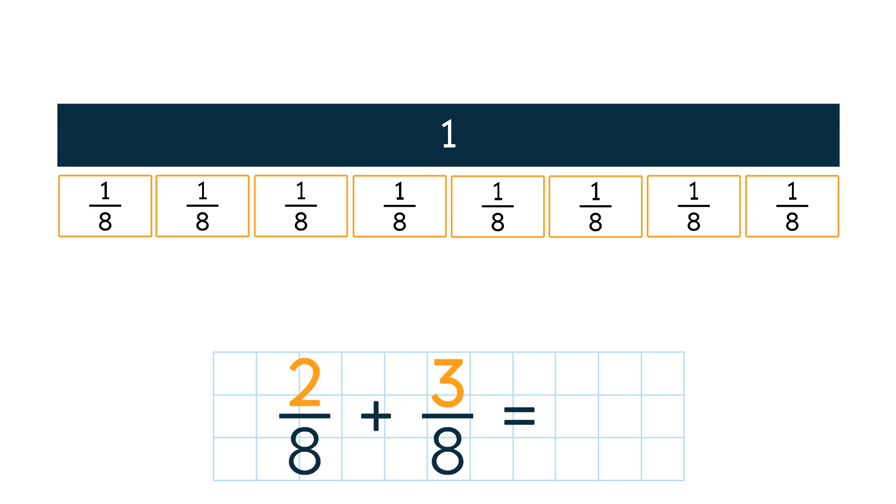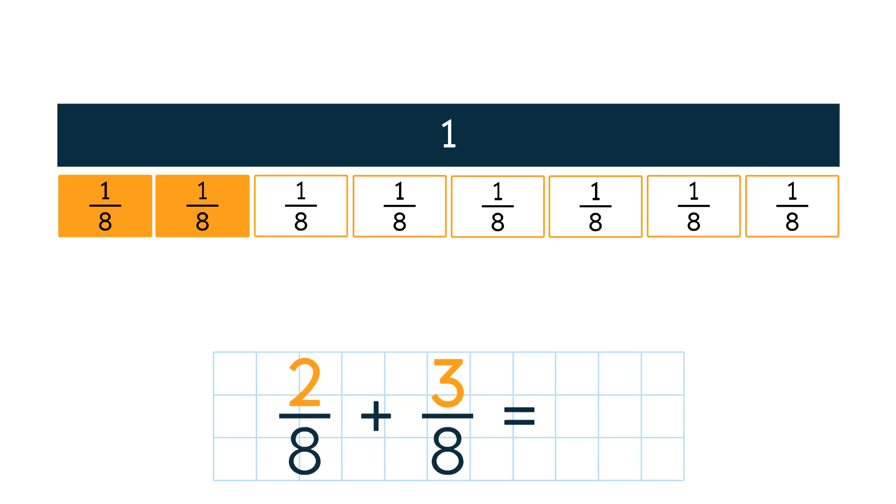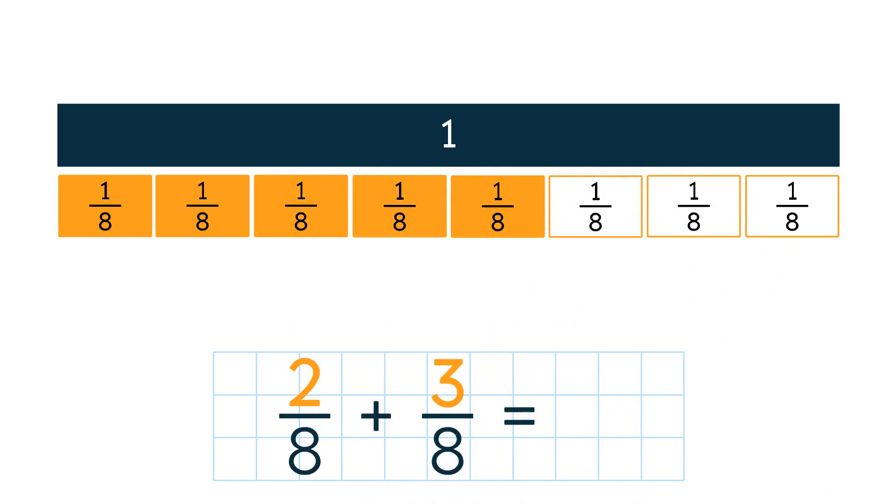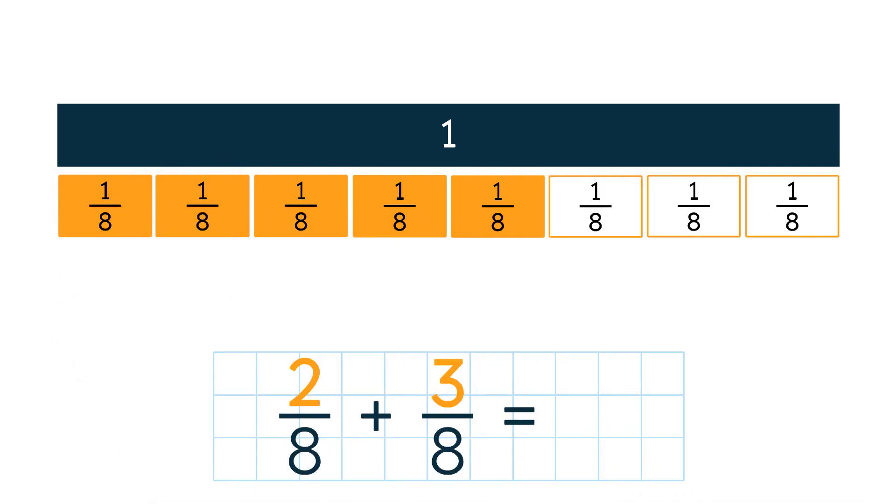First, shade 2 eighths. Then shade 3 eighths. 5 eighth sized parts were shaded, so the answer is 5 eighths.